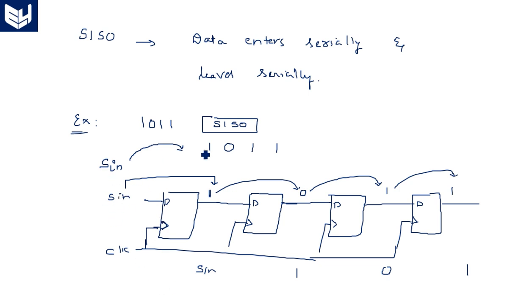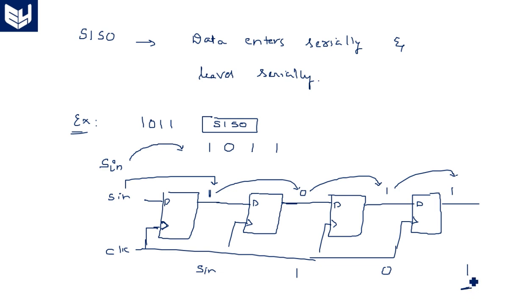After the first clock pulse the data shifts like this: serial-in followed by 1, 0, 1 — and the last 1 that was at the output exits. If a second clock pulse is given, any new input data moves in again and the existing data continues shifting along. This is the basic operation of the shift register, and now we are going to write a behavioral model for this.